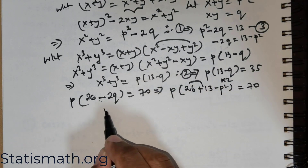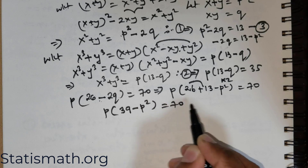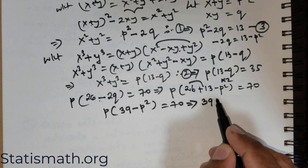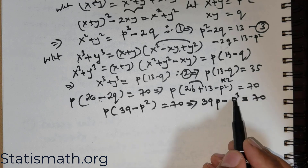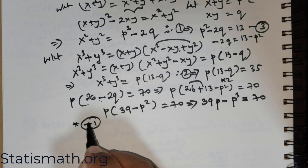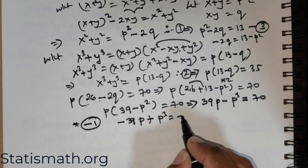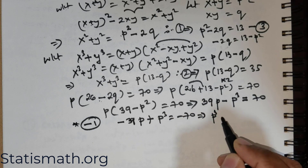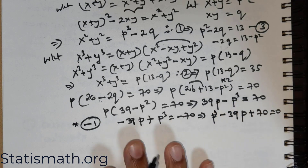I add 26 and 13 to get p × (39 − p²) = 70. Distributing p gives 39p − p³ = 70. Multiplying throughout by −1: p³ − 39p + 70 = 0.